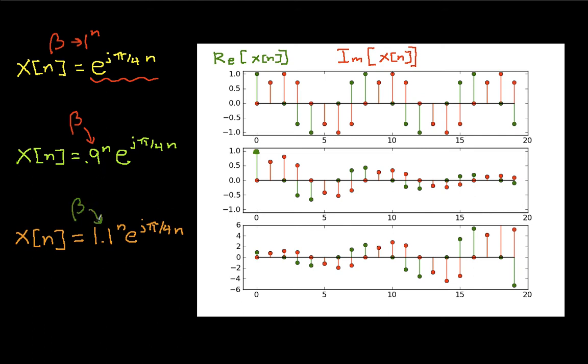On the other hand, if I have beta equal to 1.1, then I start off with a real part that's small and gets bigger and bigger and bigger. Now again, it still looks like a cosine, but as time goes on, the magnitude of the cosine gets larger and larger. And the same thing for the sine, which is the imaginary part. So I have an exponentially weighted cosine as the real part and an exponentially weighted sine as the imaginary part.